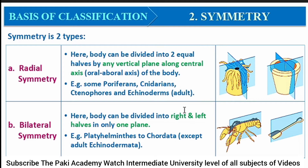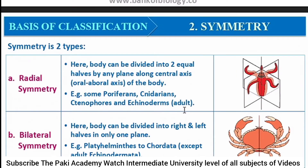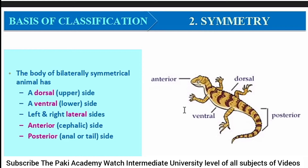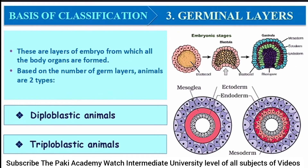Bilateral symmetry is the division of the body into right and left halves in only one plane. Echinodermata, Platyhelminthes, and Chordates come under this. A bilaterally symmetrical animal has a dorsal upper side, a ventral lower side, left and right lateral sides, an anterior or cephalic side, and a posterior side where the tail is located, as shown in this diagram.